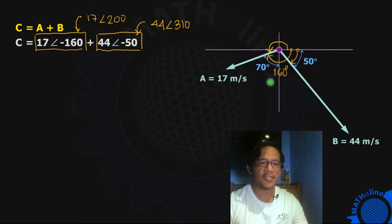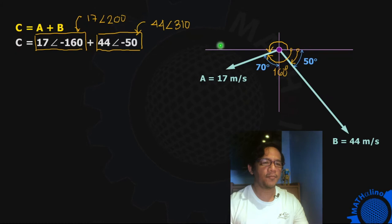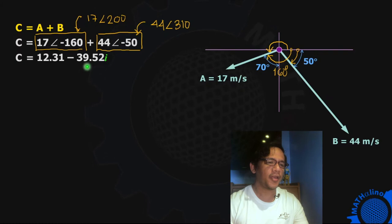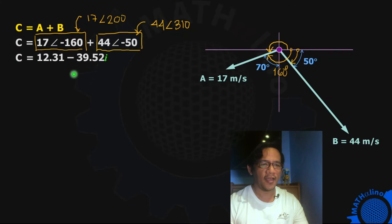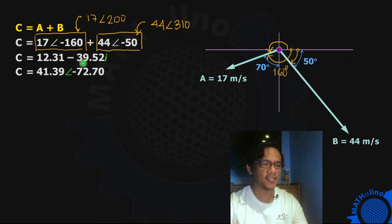Input that in our calculator in complex mode. We have this result: 12.31 minus 39.52i. We're going to interpret this later on, after we convert this into polar form so that we can see the magnitude of our resultant. In polar form, we have 41.39 angle 72.7 degrees.